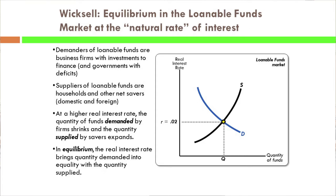People who are selling bonds are borrowing funds. Firms that are selling new shares of stock in an IPO are demanding loanable funds. It's not a typical loan — it's an equity investment — but it's getting funds today in exchange for the promise of returning the funds in the future. So all that stuff is on the demand curve for loanable funds, primarily business firms with investments and governments with deficits.